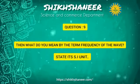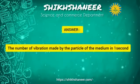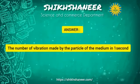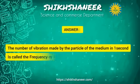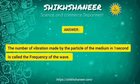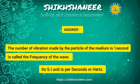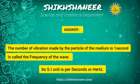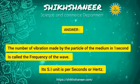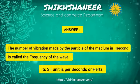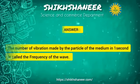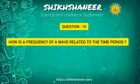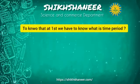What do you mean by the frequency of a wave? State its SI unit. The number of vibrations made by the particles of the medium in one second is called the frequency of the wave. Its SI unit is per second, or Hertz.